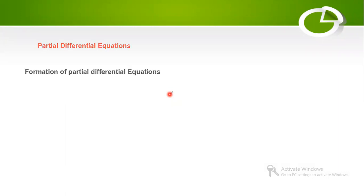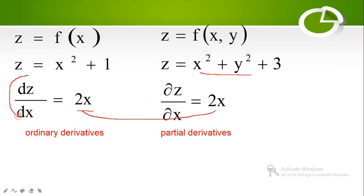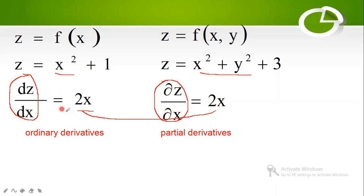Before that, see one example. Suppose z = x² + 1; if you differentiate z with respect to x we get 2x. Similarly, suppose z = x² + y² + 3; differentiating with respect to x we again get 2x. In both cases we get 2x, but the notation is different. For a function of a single variable we use dz/dx, whereas when the function depends on two or more independent variables we use the partial derivative notation ∂z/∂x.